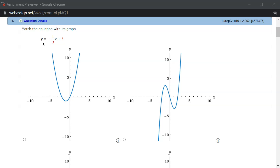It looks like y equals mx plus b form, so it's going to be a linear function, so it's going to be a straight line. The slope is negative one-third, so it's going down, and y-intercept is 3.